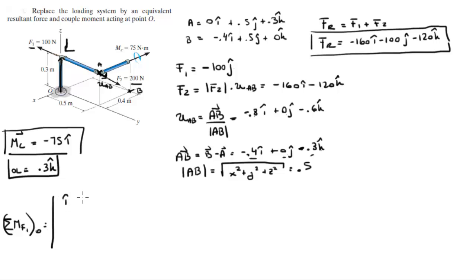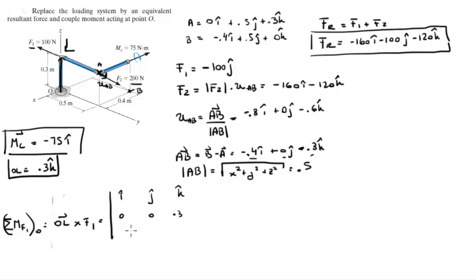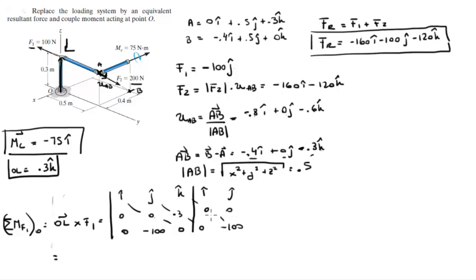Setting up the determinant matrix: first row is i, j, k; second row is OL which is 0, 0, 0.3; last row is F1 which is 0, -100, 0. Computing the positive and negative diagonals: (-100)(0.3) gives +30 in the i direction, and the remaining terms are 0. So the moment F1 creates is 30i.